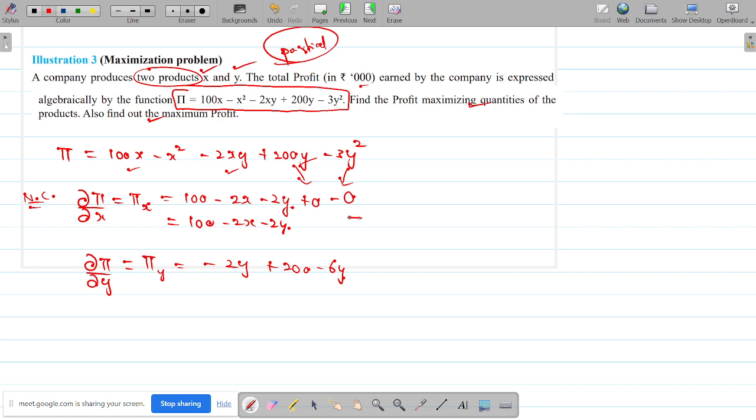First one I will equate. This is 100 minus 2X minus 2Y equal to 0. This will be X plus Y is equal to 50. And if you find it over here, minus 2Y plus 200 minus 6Y which is 8Y equal to 0. 200 is equal to 8Y. X plus 3Y is equal to 100.